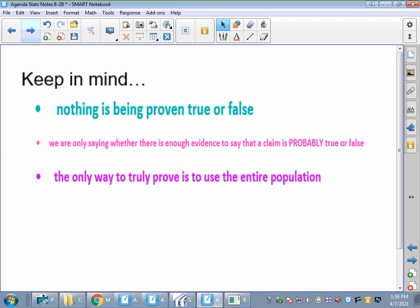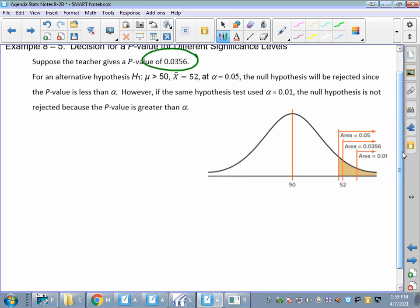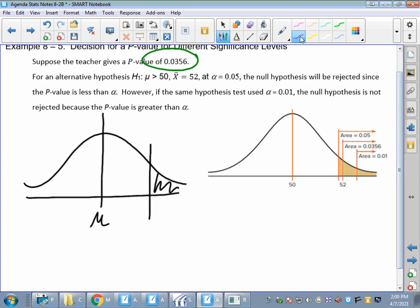Let's look at some more of these p-values. Suppose the teacher gives a p-value of 0.0356. They're using a right-tailed test, right? So here's my mu in the middle. This area is 0.0356. That's what the teacher gives. So that's my shaded region. That's what I'm comparing. For the alternative hypothesis, h sub 1 mu is greater than 50, x bar is 52, at alpha equals 0.05.